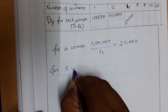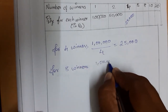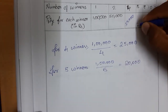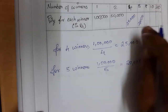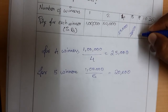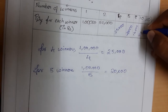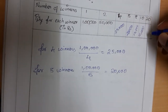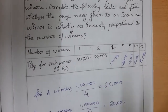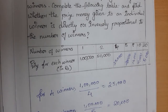For 5 winners: 1,00,000 ÷ 5 = Rs. 20,000 each. For 8 winners: Rs. 12,500; for 10 winners: Rs. 10,000; for 20 winners: Rs. 5,000. Now we have to decide whether this is direct or inverse proportion.